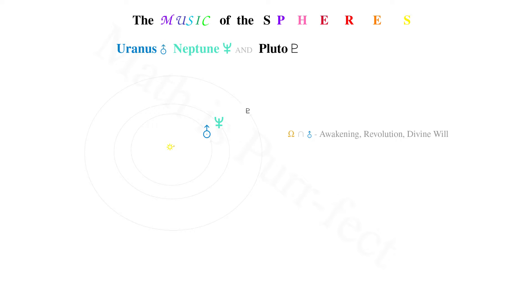The Aum-Neptune perfect fifth has a mystical and transcendental quality, evoked by Neptune's watery domain. This is the interval of poets and dreamers, and from whence such inspiration derives.